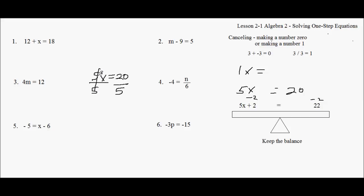And that cancels, it becomes a 1. I get 1x equals 4. So I get 1x equals 4, which is the same as x equals 4. Same as x equals 4.